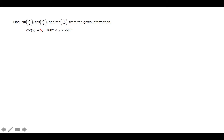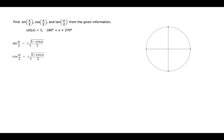We are to find the sine of x over 2, cosine of x over 2, and tangent of x over 2 from the given information. We're told that the cotangent of x is 5, and that the angle x has a measure between 180 degrees and 270 degrees. We will need the half-angle formulas for the sine and the cosine, and then we can use these to find the tangent. So we'll draw a circle.